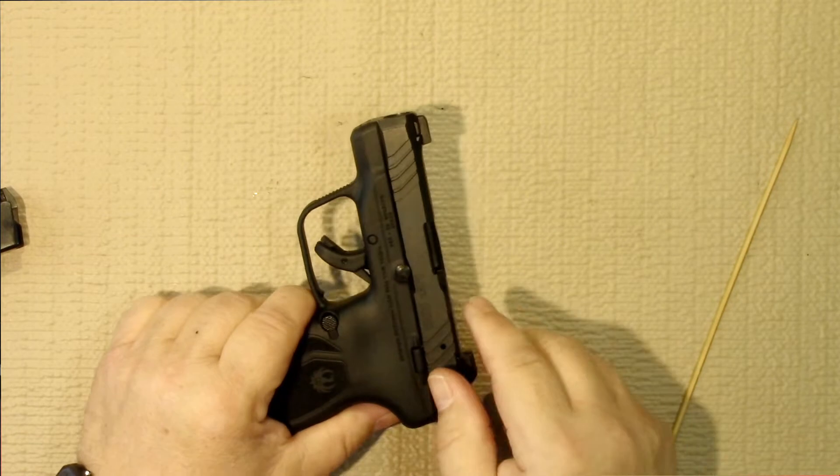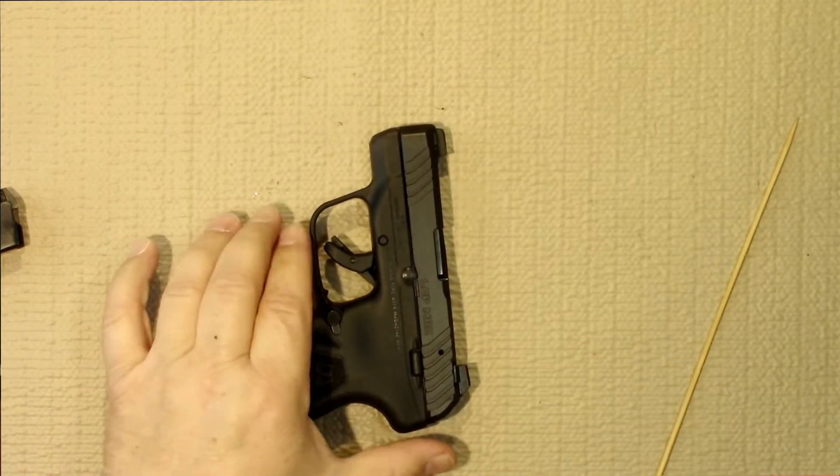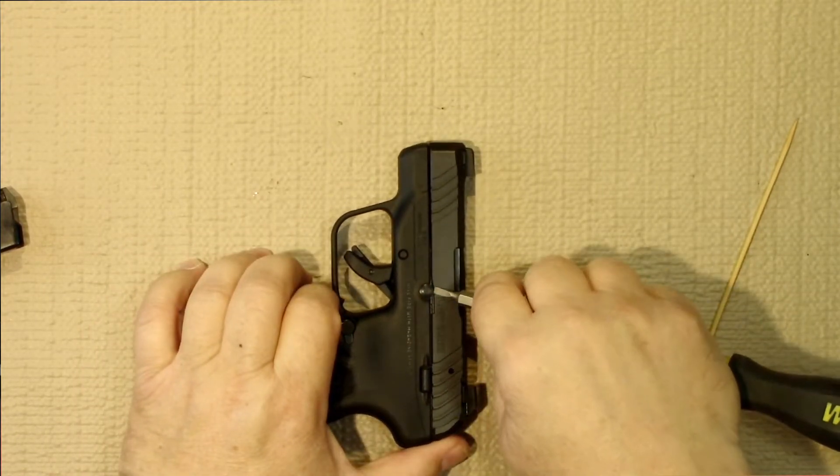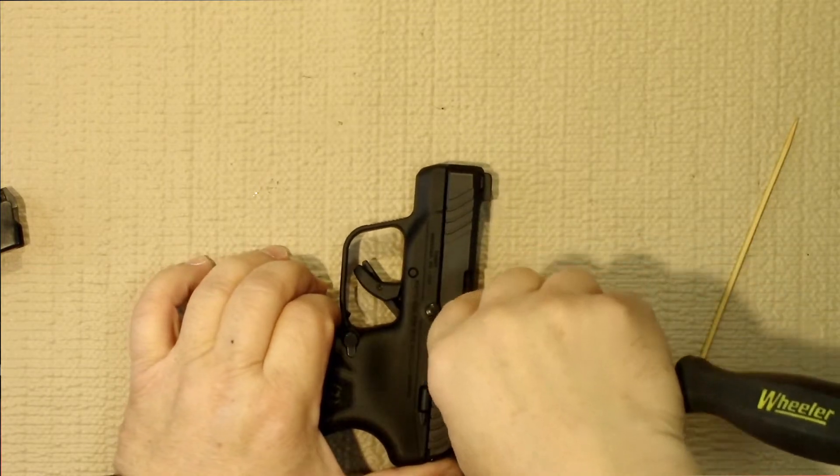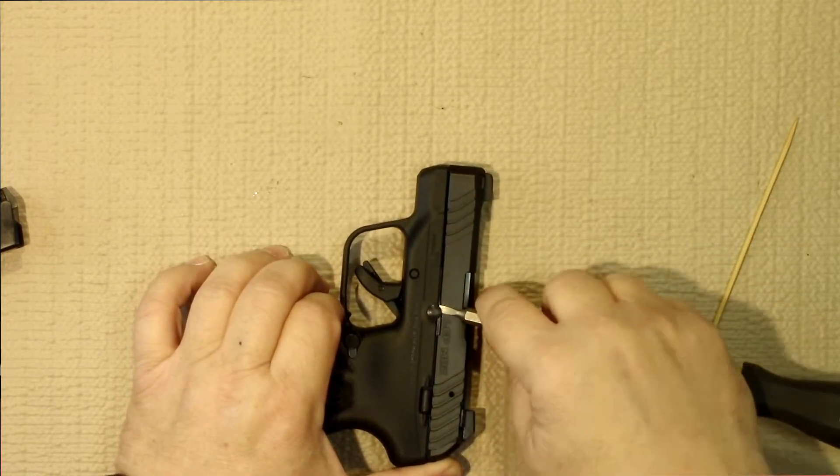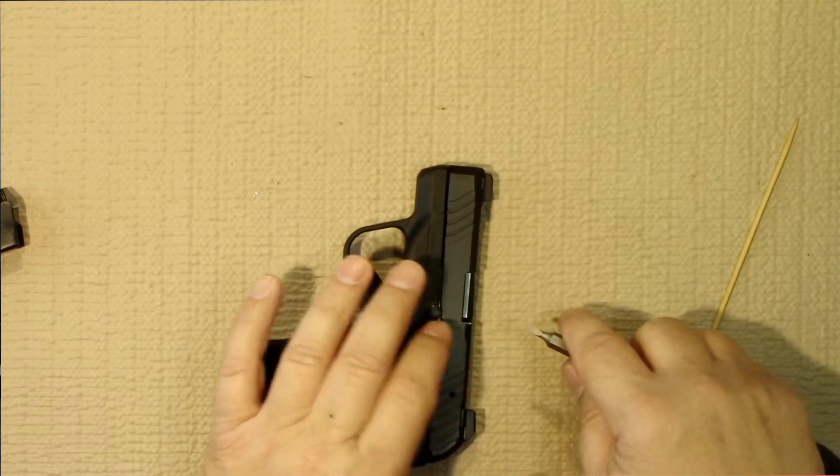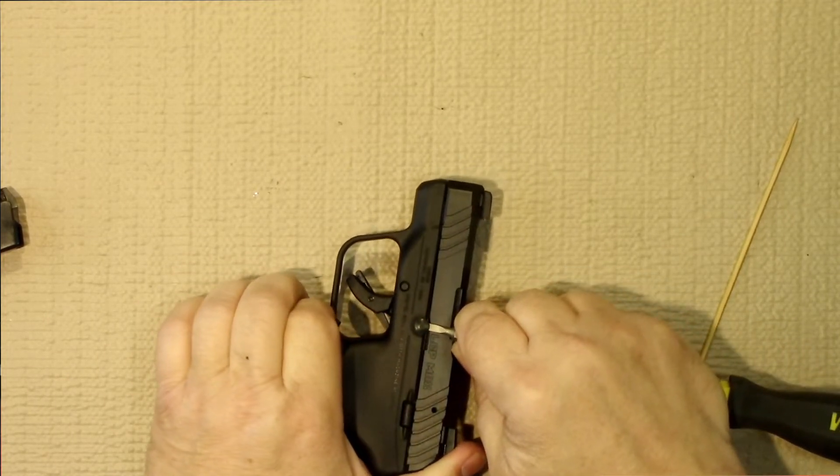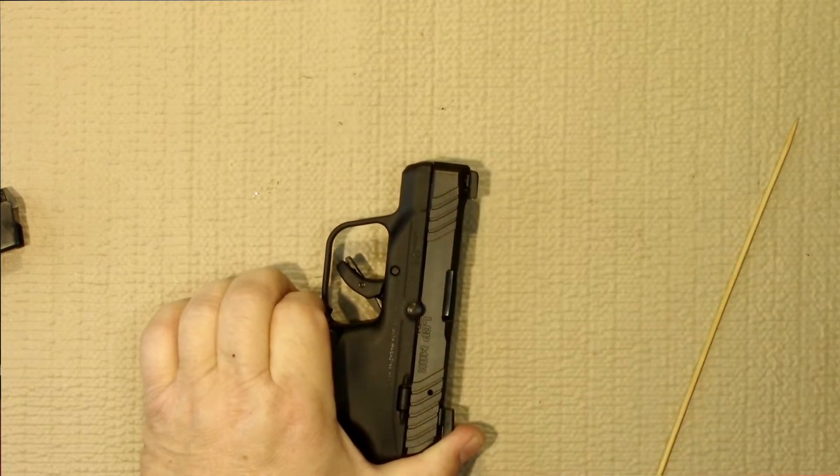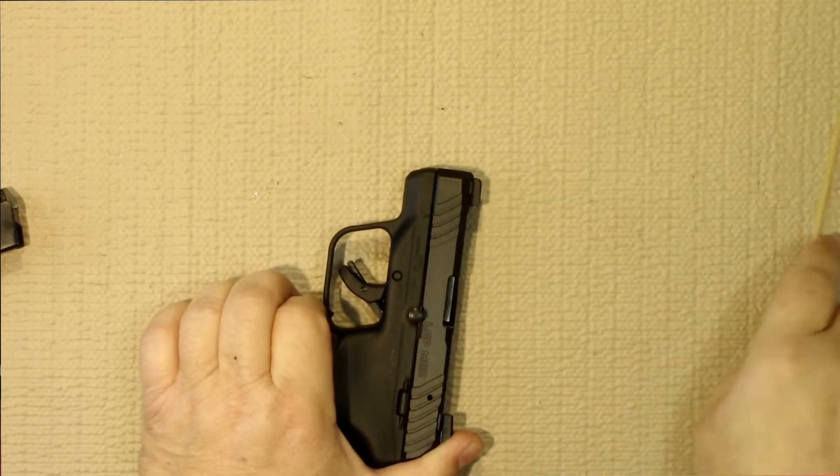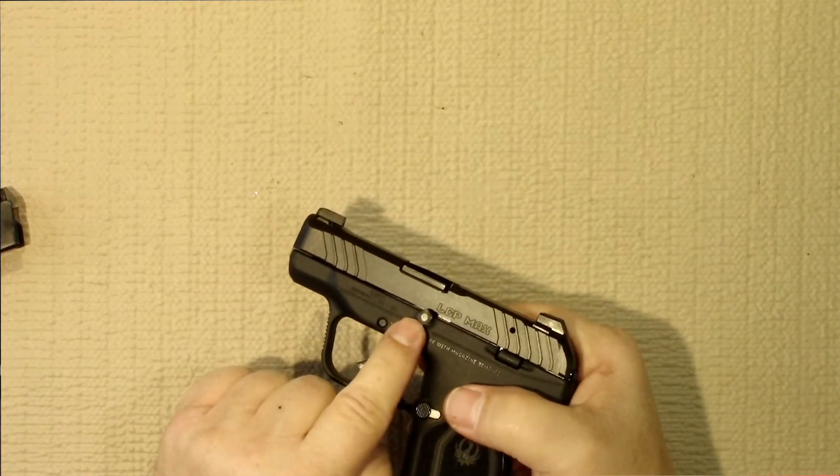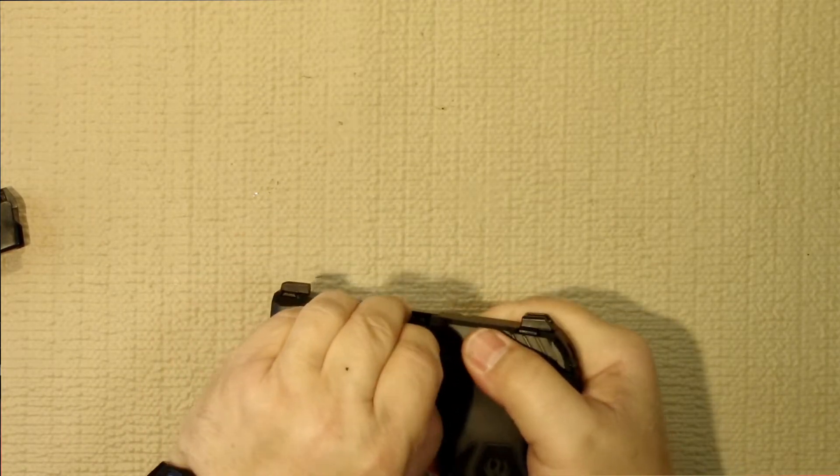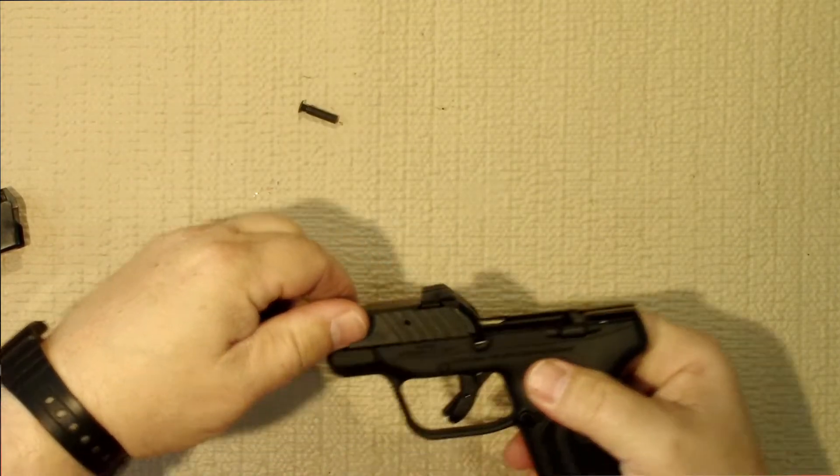Use a small screwdriver and just get it under there. Be careful not to pry too much to damage the finish, but just lift up slightly. Honestly, it'll feel like you're about to break something - that's just normal. That will release the pin. Then you just remove the pin and the slide will come off the front.